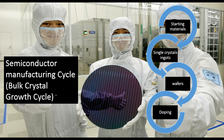In the previous class we discussed the bulk crystal growth cycle. Our starting material is silicon dioxide, from which we get ingots, and from those ingots we create wafers. Those wafers will act as a seed for us, and on those wafers we will grow some layers.